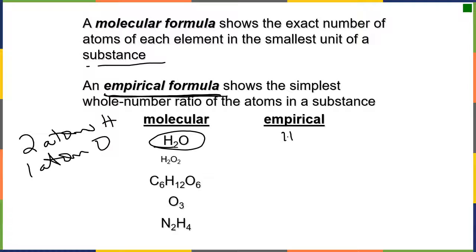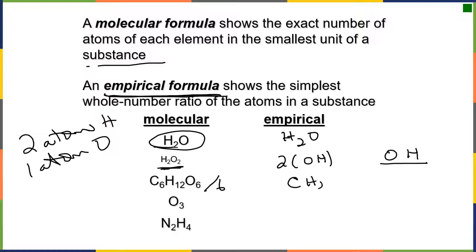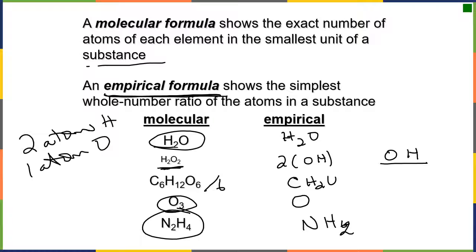Some of these are going to be the same. The simplest whole ratio for water is H₂O — it cannot be simplified. Hydrogen peroxide, on the other hand, has an empirical formula of OH. Glucose can be divided by six to give CH₂O as the empirical formula. For ozone it's just a ratio of oxygens, and for N₂H₄ the simplest ratio is NH₂. Molecular is the exact number of atoms; empirical is just the simplest whole number ratio.